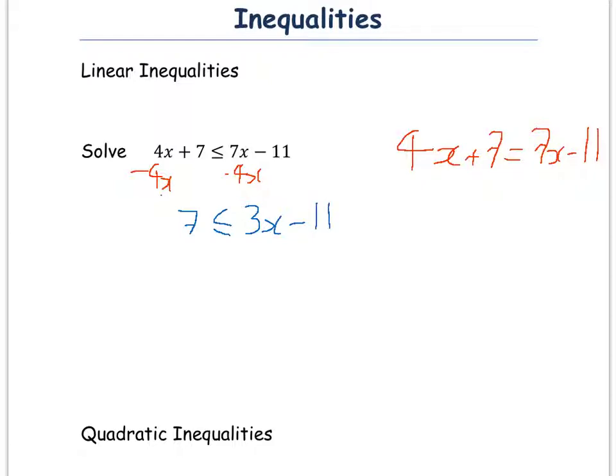Next step is to add 11 to both sides. If I do that, I'm left with 18 is less than or equal to 3x, and then you divide through by 3,